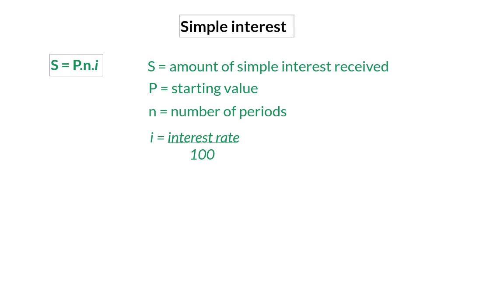This formula takes the original amount or starting value and multiplies it with the interest rate to determine the interest for one year, and then multiplies that value by the number of years to determine the total amount of interest received.